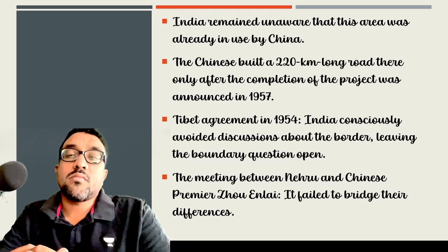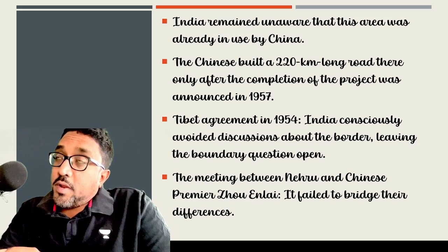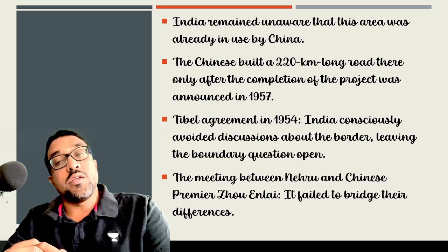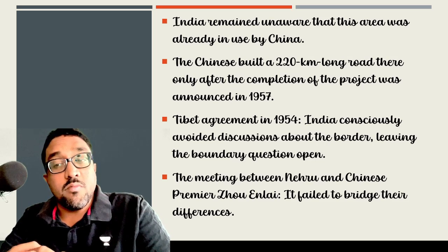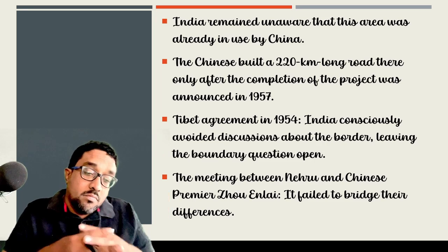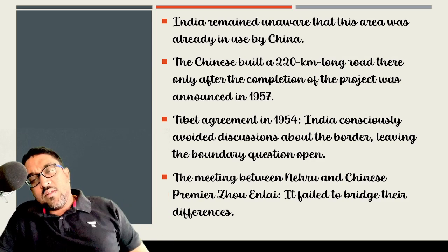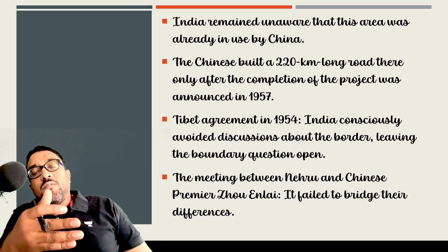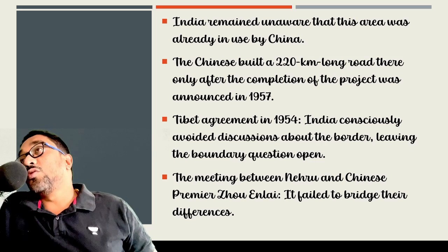By 1957, the Chinese had built a 220-kilometer-long road, and it was only after the completion of the entire project that China openly declared they had built a road in Indian territory — India's controlled Ladakh region of Aksai Chin. In 1954, there was an agreement called the Tibet Agreement, where India consciously avoided discussions about the border, leaving the border question open. Many historians, political thinkers, and diplomats consider that India, by disregarding any discussions on the border, left the border question vague, with no specific solution coming to the border issue.